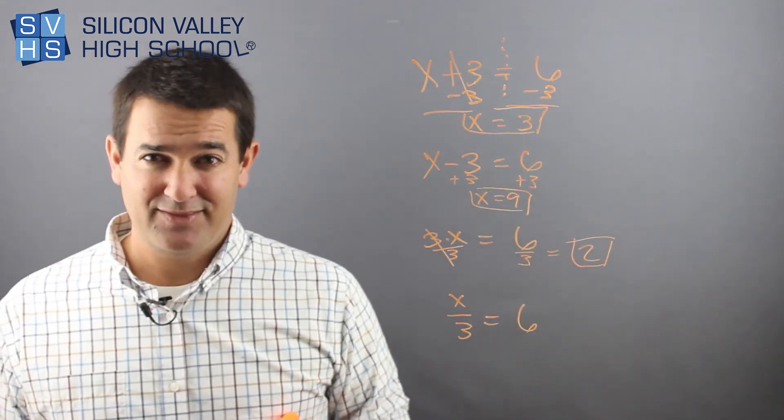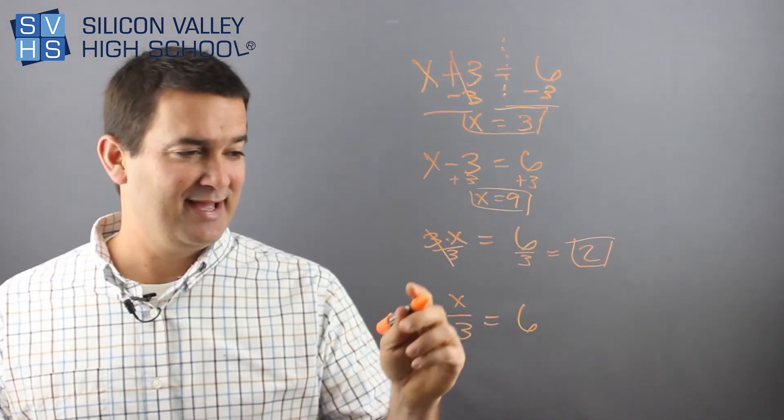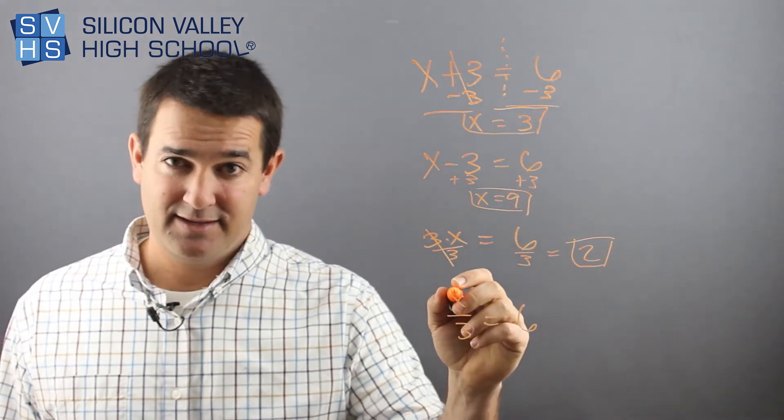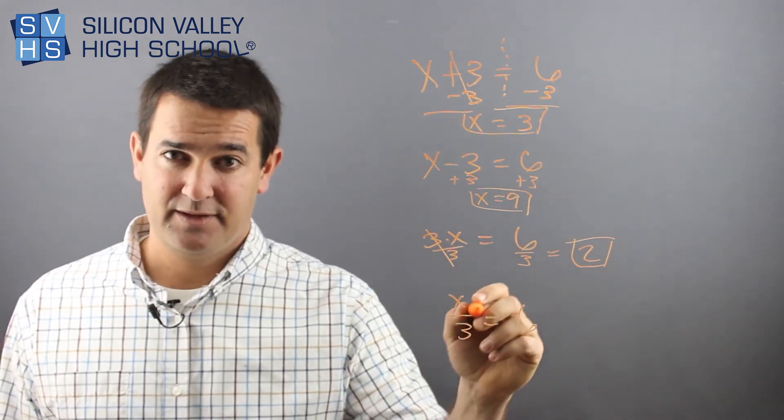This is the one that every kid in the world messes up. Just think about it as the opposite game. This is x divided by three equals six. What's the opposite of division?